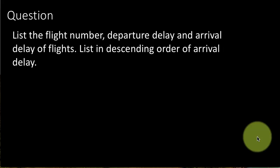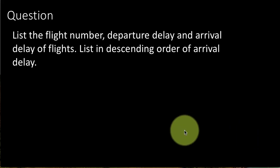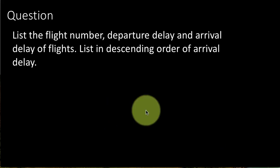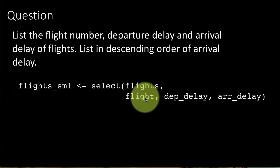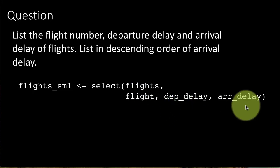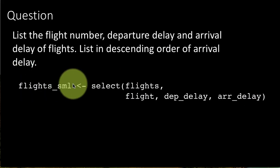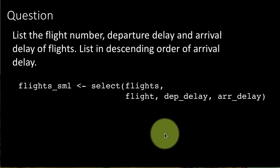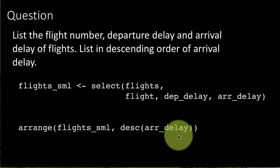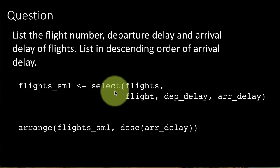Let's try an example: list the flight number, departure delay, and arrival delay of flights in descending order of arrival delay. We do this in two steps — first, select(flights, flight, dep_delay, arr_delay), storing the result in a variable called flights_sml. Note that 'flights' is the table and 'flight' is a column in it. Then we say arrange(flights_sml, desc(arr_delay)) to sort in descending order of arrival delay.